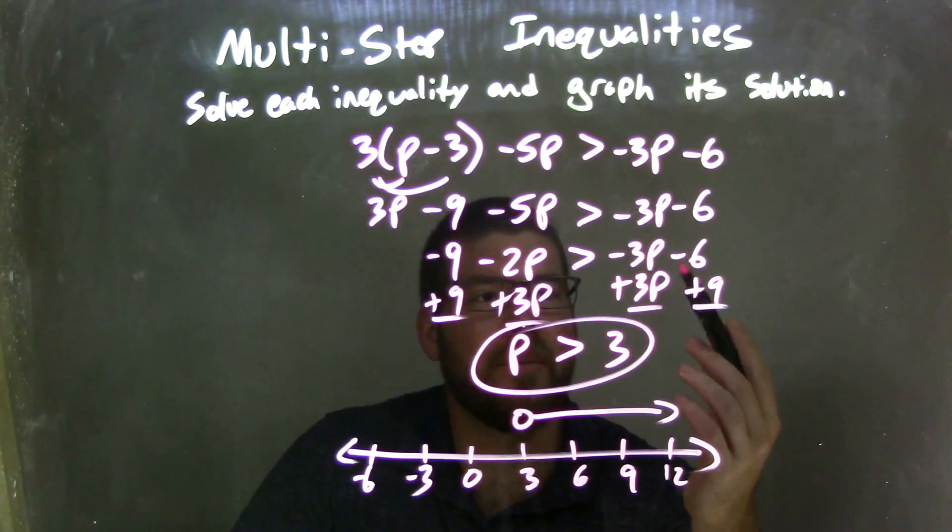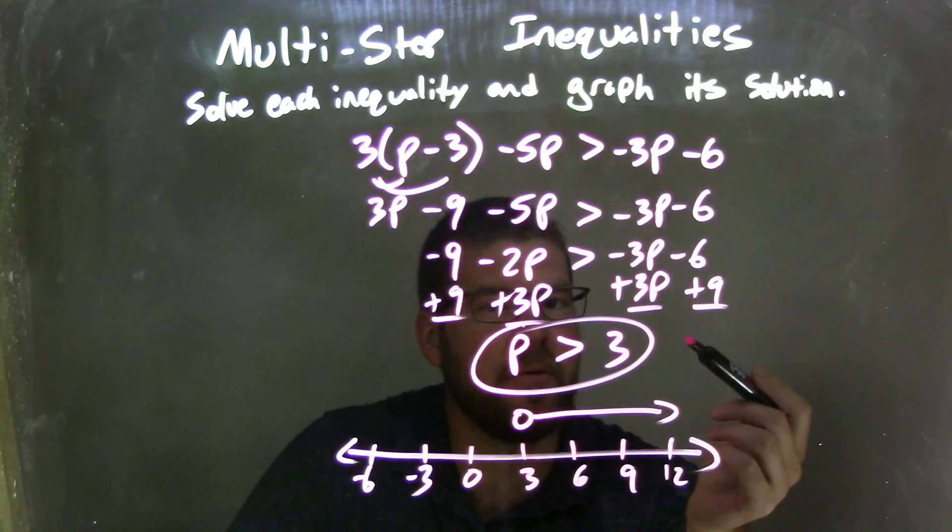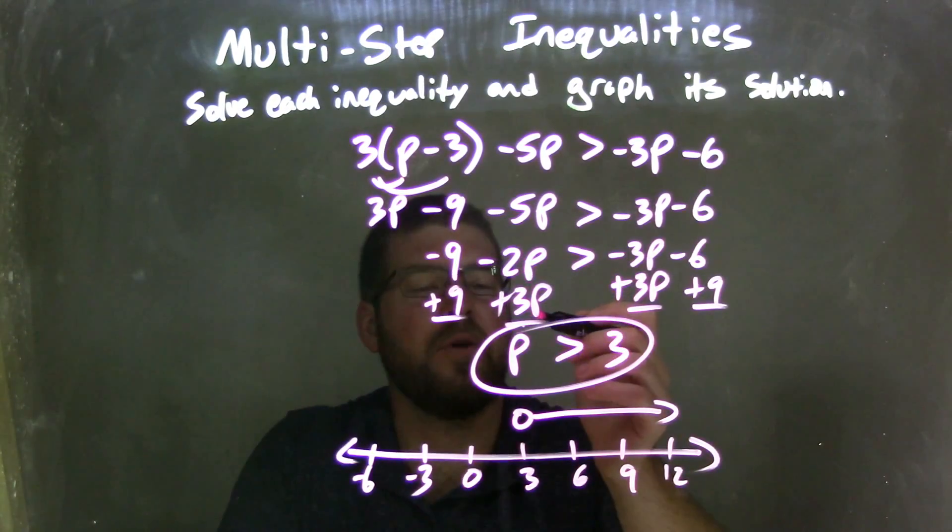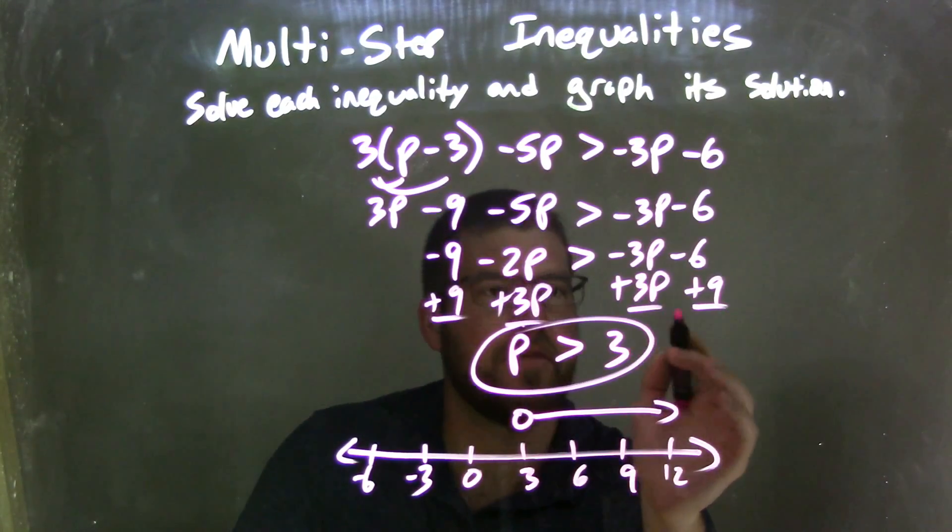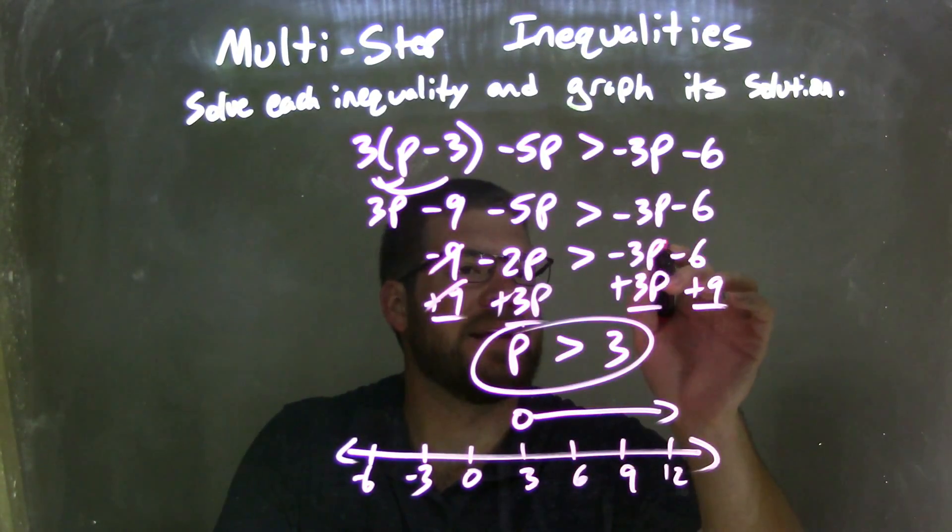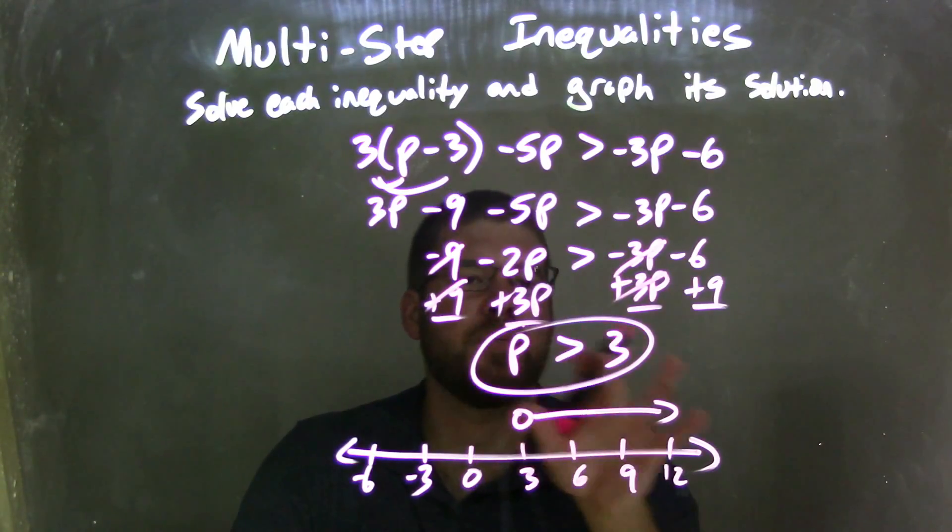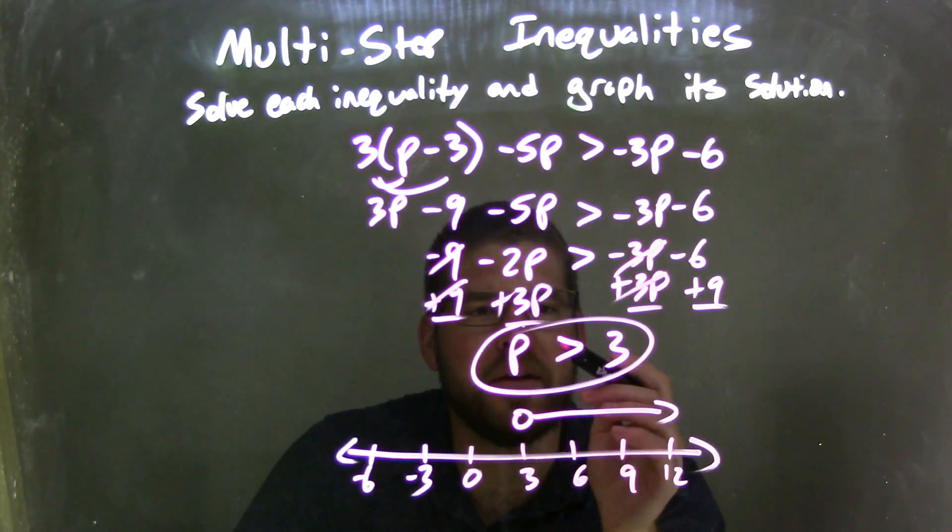I'm going to combine my like terms, so I'm going to bring my p's to the left and my numbers to the right, leaving me negative 2p plus 3p is positive 1p, and negative 6 plus 9 is positive 3. And we can see where they end up being eliminated there. Make sure they match up rightly. And so we have p is greater than 3.